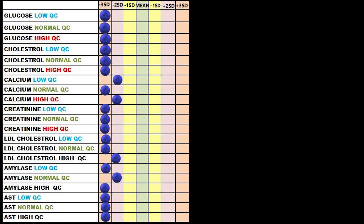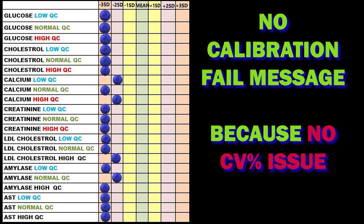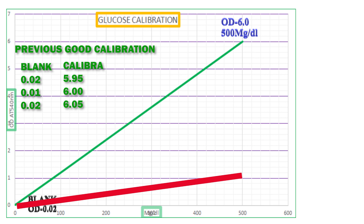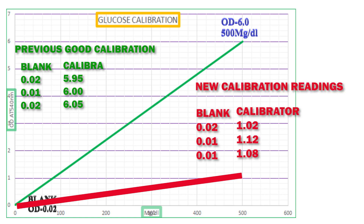Not all calibration failures give obvious calibration issues — many times QC fails due to improper calibration that we need to fix. You can compare the previous good calibration curve reading with the new one. For example, if the blank reads 0.02, 0.01, and 0.01, the precision looks good. But if the new calibration values are 1.02, 1.12, and 1.08, the precision also looks good.